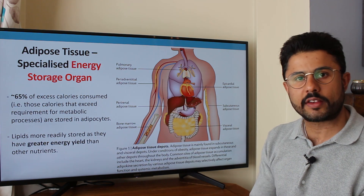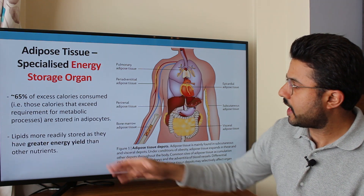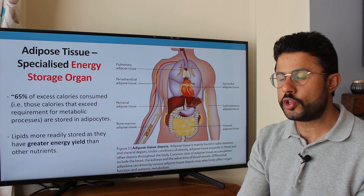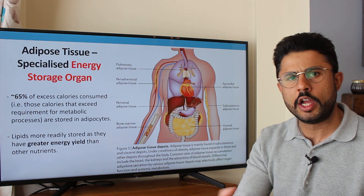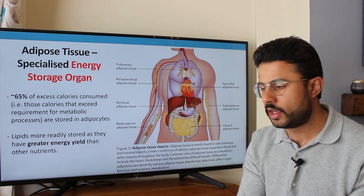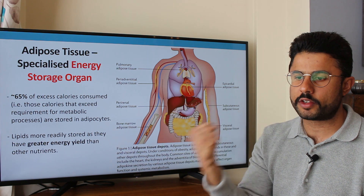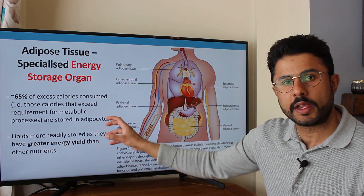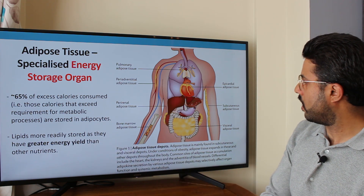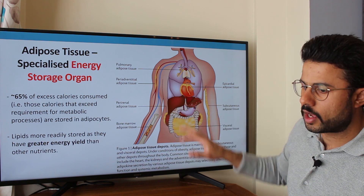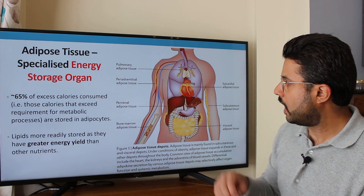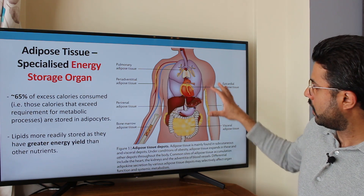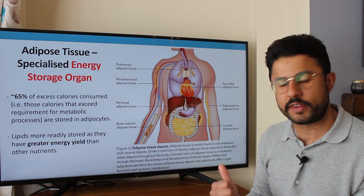The reason lipids are more readily stored as fat compared to carbohydrates is because they have a much greater energy yield. When you break down fat to produce energy, you get much more ATP — adenosine triphosphate — which is the usable form of energy our cells use to carry out functions. ATP is more readily available when fat is broken down compared to other substrates. This figure is adapted from an excellent review article which I'll link below the video.